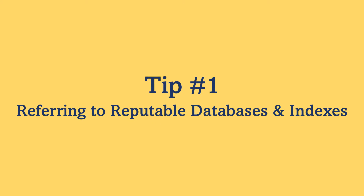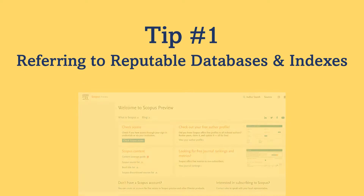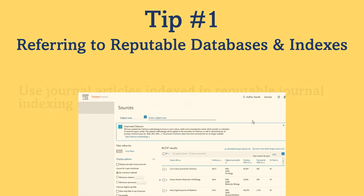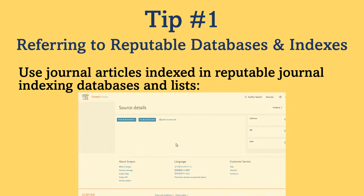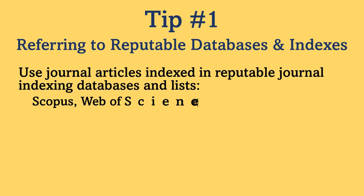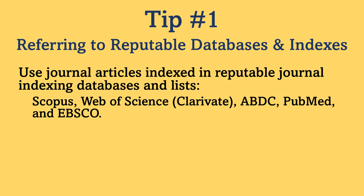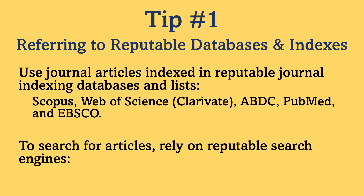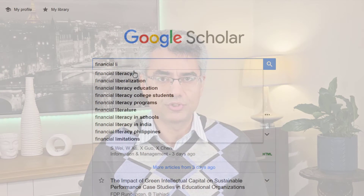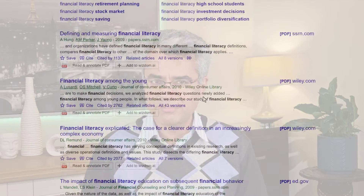Tip number one: refer to reputable databases and indexes. I personally almost always use journal articles indexed in reputable journal indexing databases and lists such as Scopus, Web of Science, ABDC, PubMed and EBSCO. Also, to search for articles, rely on reputable search engines such as ScienceDirect, Scopus, Web of Science and JSTOR. I understand the popularity of Google Scholar among researchers. However, Google Scholar does not filter poor quality sources, so be cautious and ensure you use quality assessment criteria when relying on Google Scholar results.